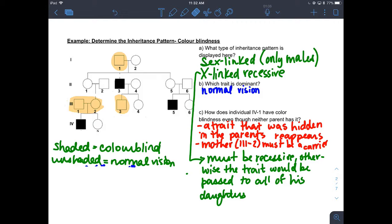But because they are a carrier and they pass it on to their son in generation four, we know that mother or generation three, person two is a carrier. So that's just one example we can look at how we can determine if it's sex-linked or autosomal and whether it's recessive or dominant.